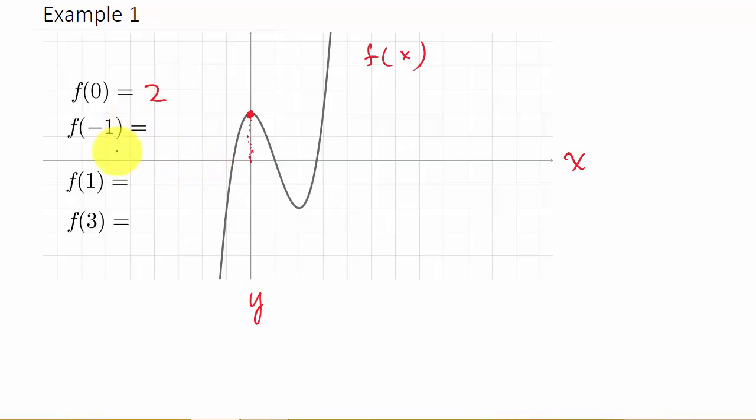Let's do f of negative 1. So x is negative 1. On the x-axis, we go to where x is negative 1, which is right here. And here we have to move down to hit the graph, and you can see we hit the graph right here.